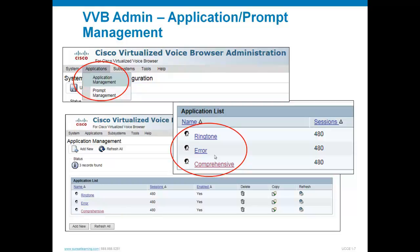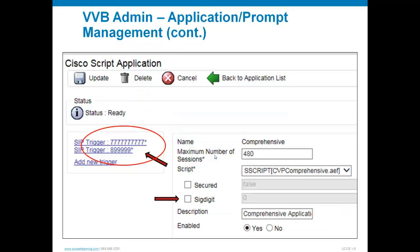The ringtone and air applications have the 9191 and 9292 patterns pointed to those applications. The application called comprehensive is actually taking the place of historically what was the bootstrap tickle running on the Voice XML Gateway. The patterns in the form of the label and correlation ID point to this application called comprehensive. Let's take a closer look at this comprehensive application.